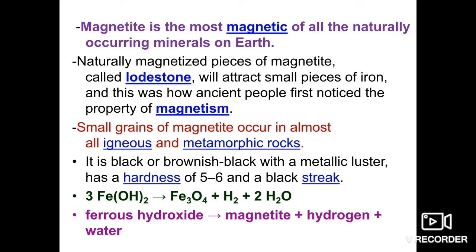Small grains of magnetite occur in almost all igneous and metamorphic rocks. Their quantity may vary, but small grains of magnetite are present in almost all igneous as well as metamorphic rocks — sometimes in major amounts, sometimes in trace amounts.